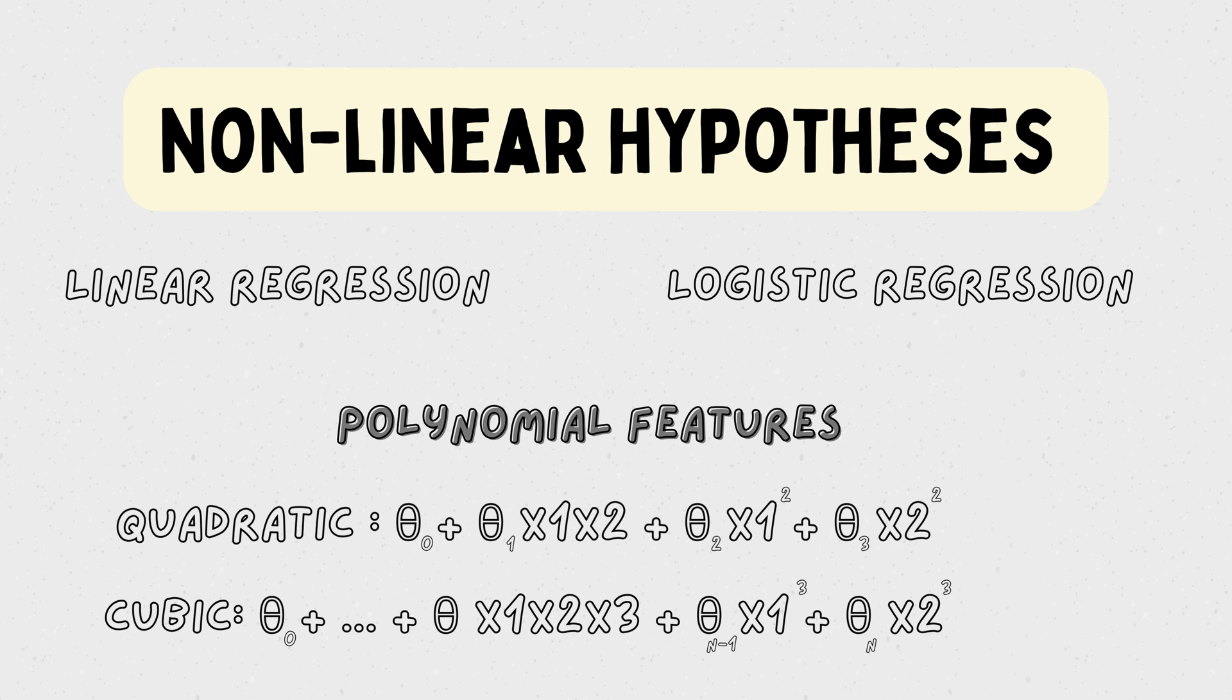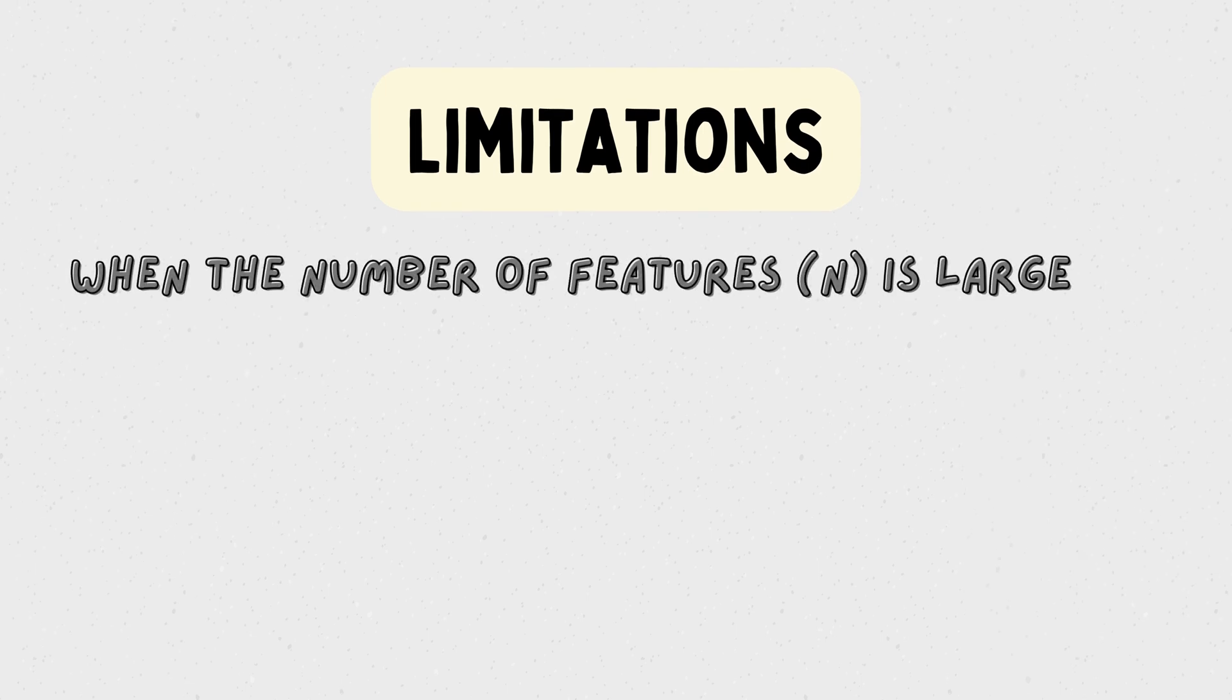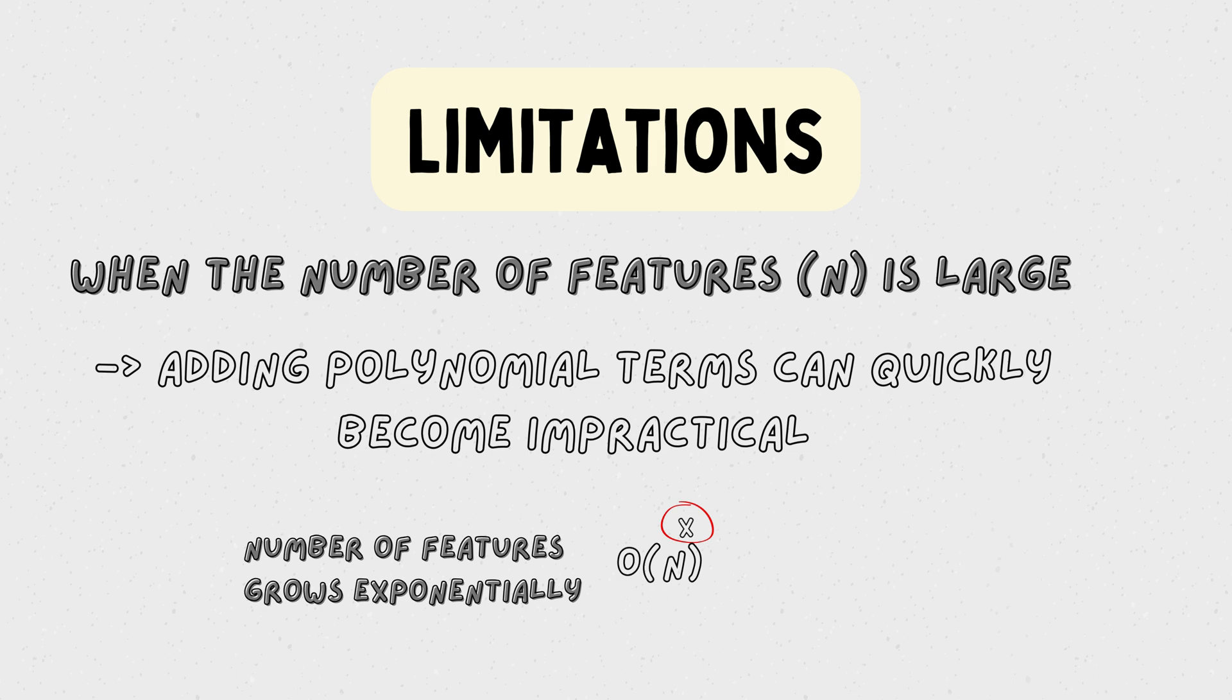When the number of features n is large, adding polynomial terms can quickly become impractical. The number of features grows exponentially, leading to an explosion in the complexity of the model.